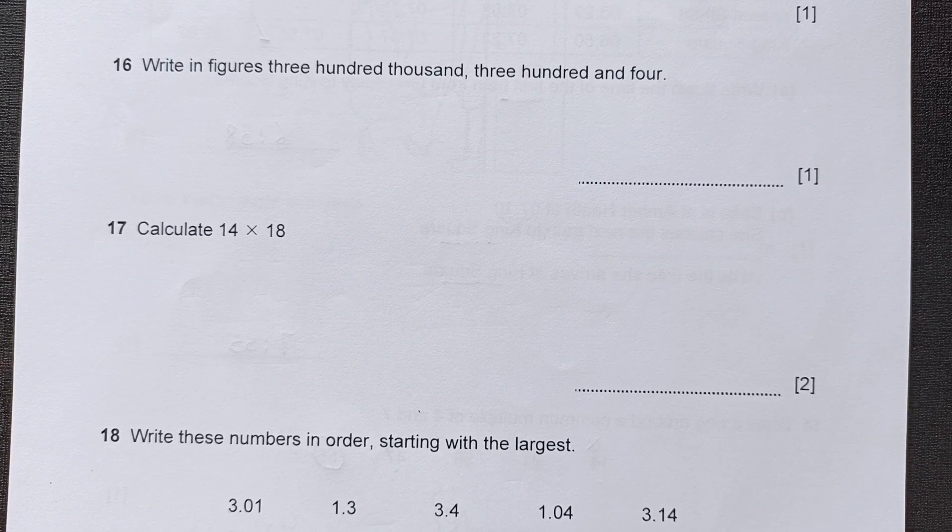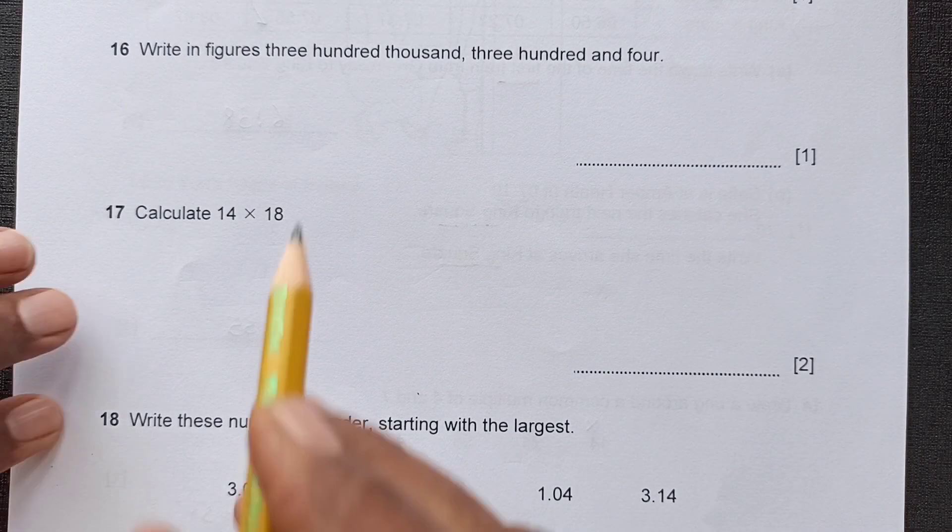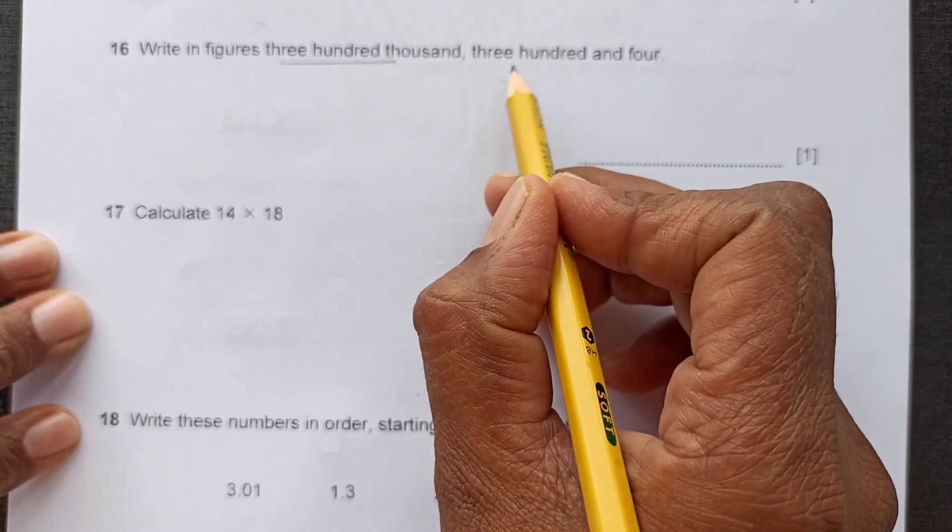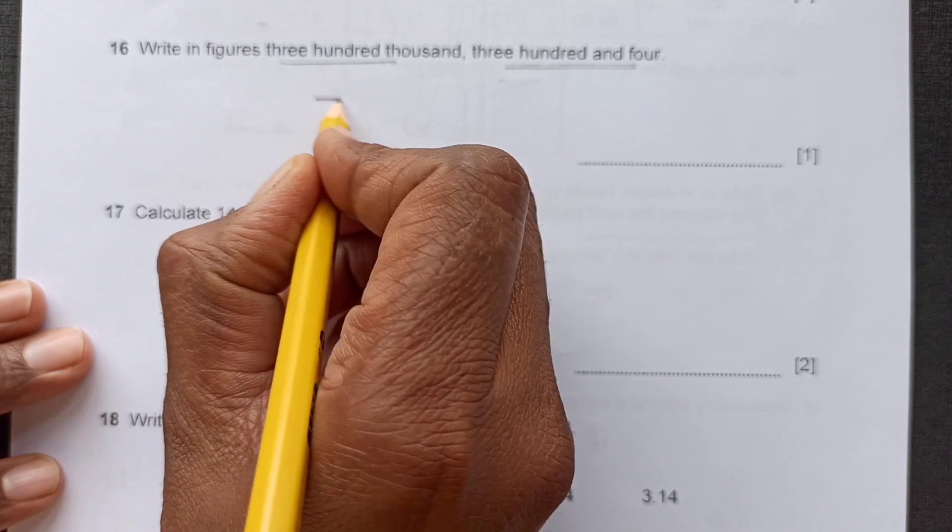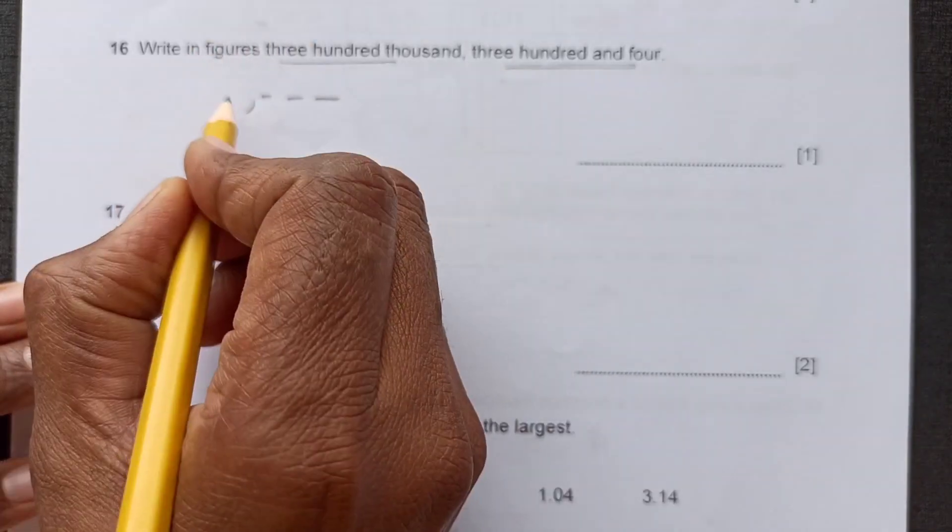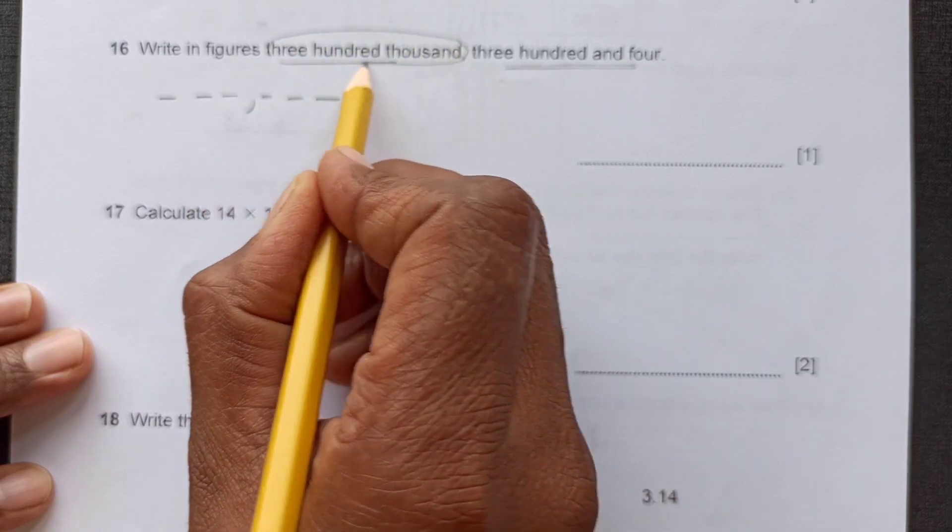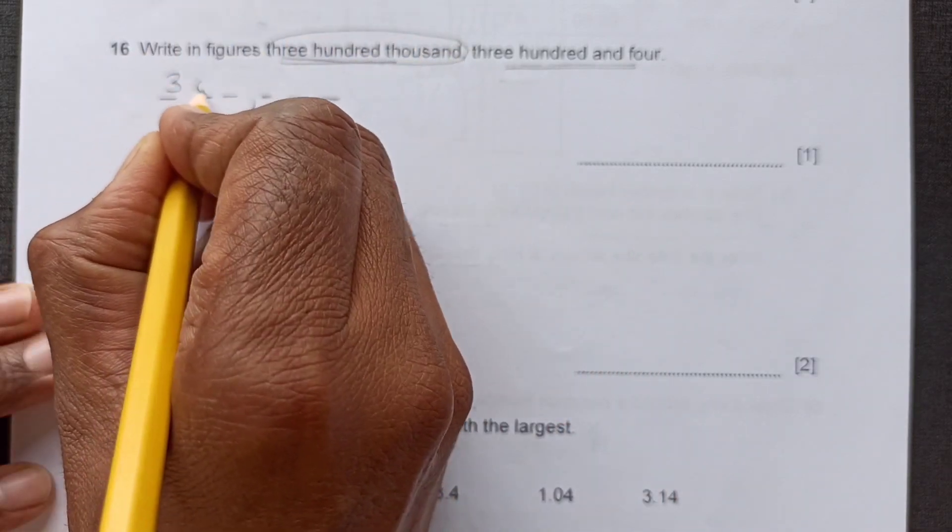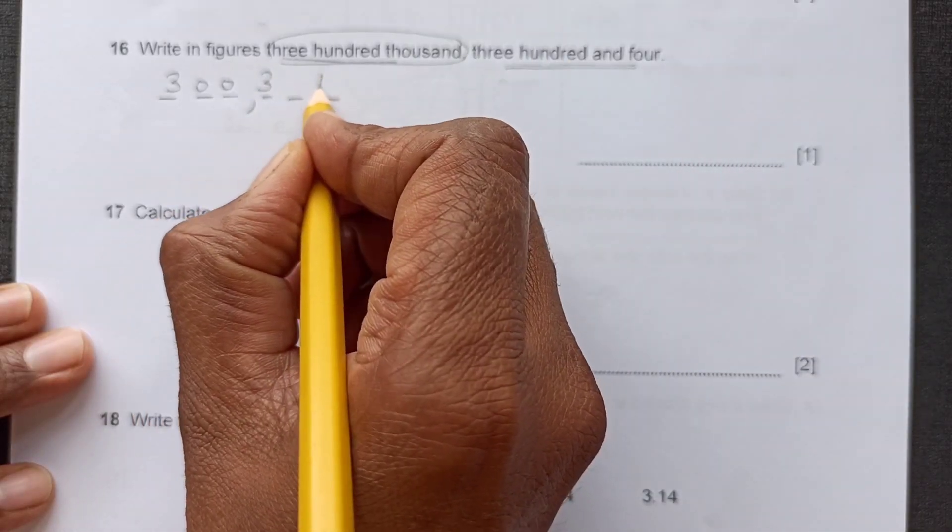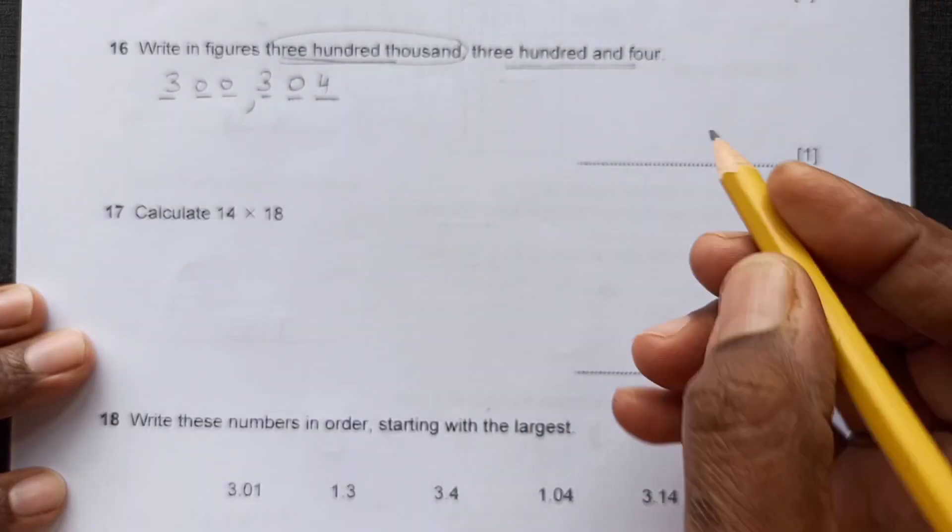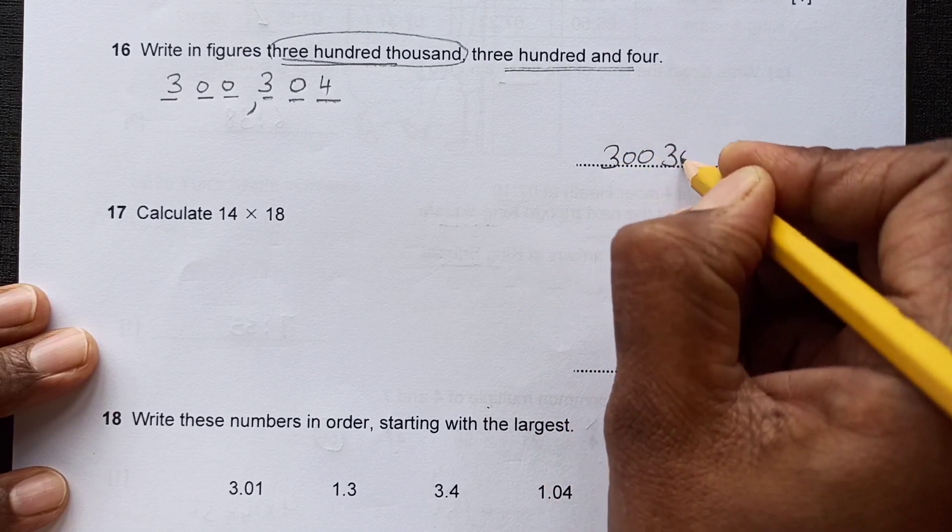Now next one. Write in figures 300,000 and 304. So we have to place ones, tens, hundreds, then we have thousands, ten thousands, hundred thousands. We have 300,000, then 304. So this will be filled up with zeros. So it is 300,304.